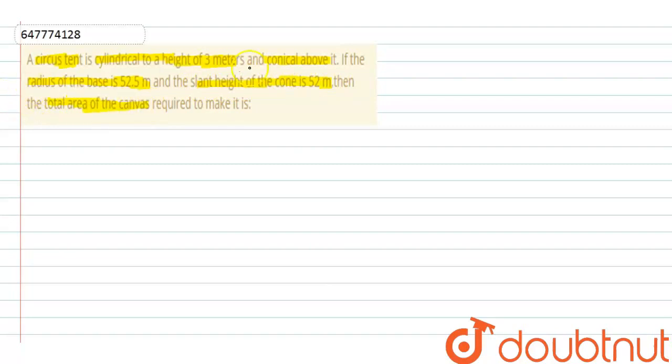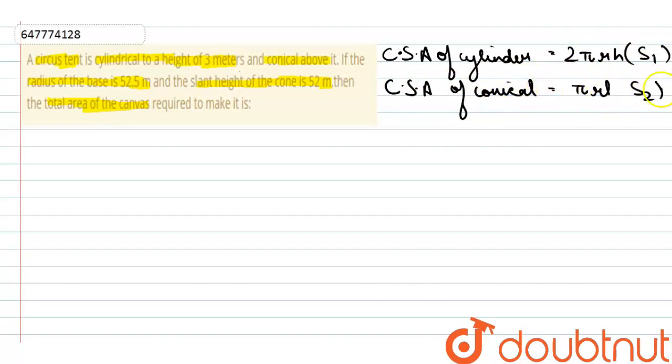So, things we should keep in mind: curved surface area of cylinder is equal to 2πrh, we can term it as S1. And curved surface area of conical portion is equal to πrL. We will term it as S2.